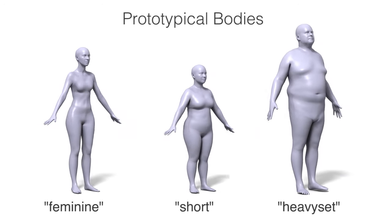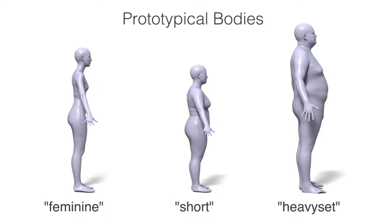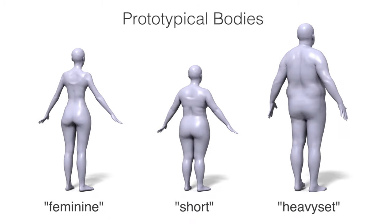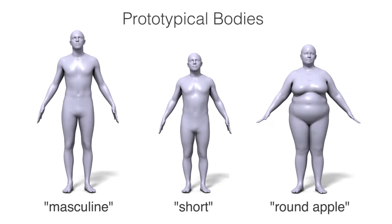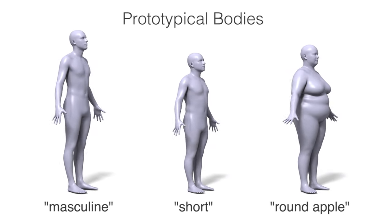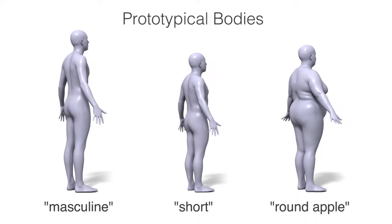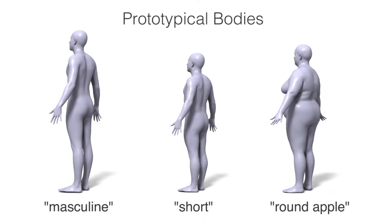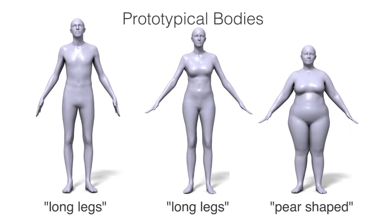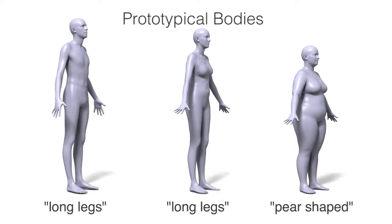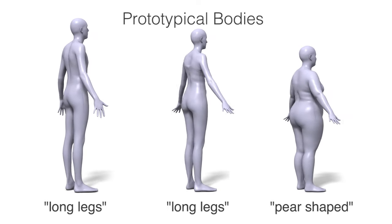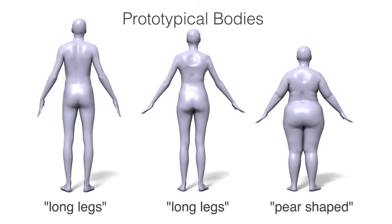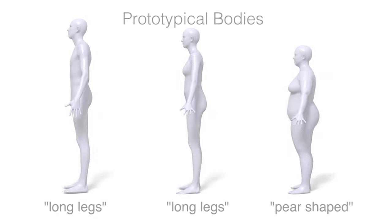We can use our model to better understand what shape words mean. The shape descriptors are correlated, and our model captures those correlations. To create a prototype body corresponding to pear-shaped, for example, we set the pear-shape rating to be high and predict the values of all the other ratings. This is done by simply conditioning a multivariate Gaussian on the word or words of interest. The resulting body shapes correspond to our prototypical, shared idea of human shape. Notice that common descriptors like pear-shaped or long legs correspond to body shapes that we immediately recognise as matching these words.